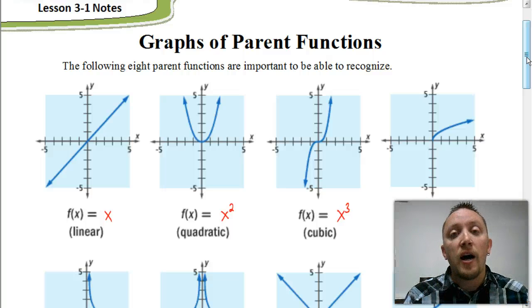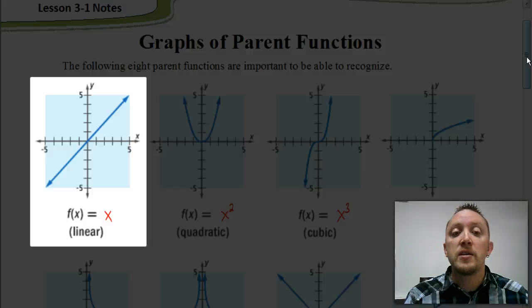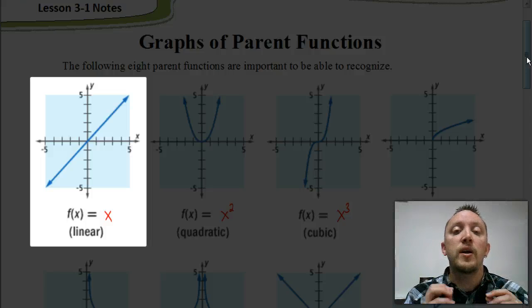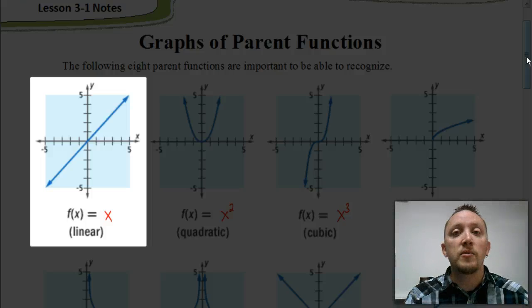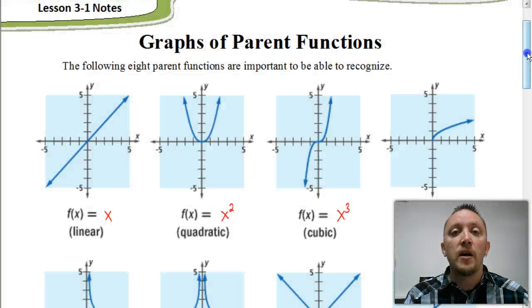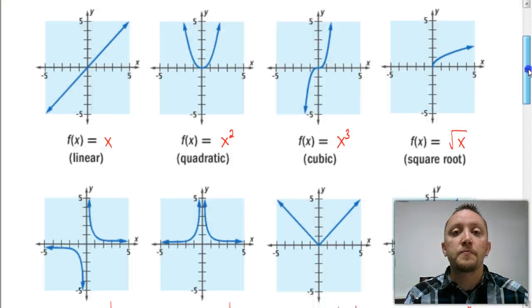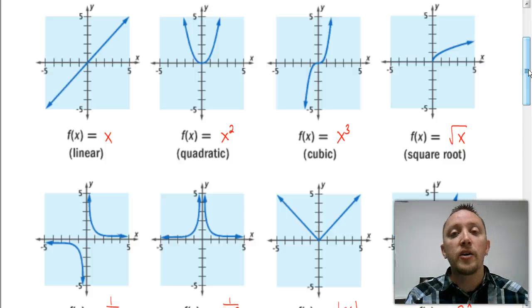For example, here we have y equals, or f(x) = x is our parent function for a linear equation or a linear function. So that means all straight lines are based on that one function. So we're going to look at a total of eight different parent functions here. Let's take a second now, and I'm going to scroll, so that way you can see some of these other functions.